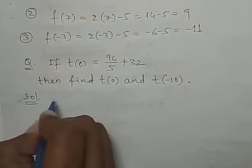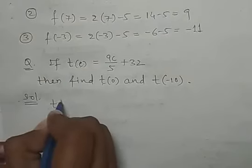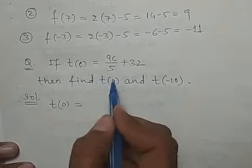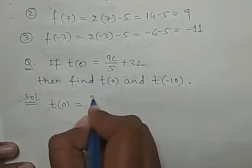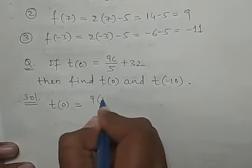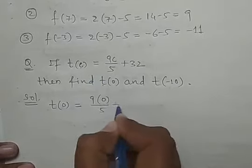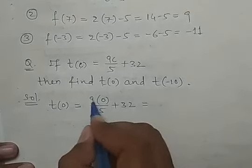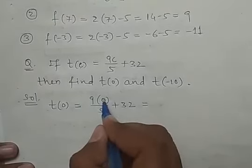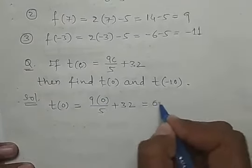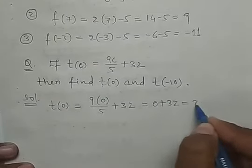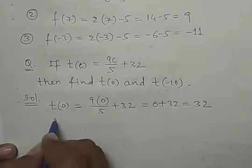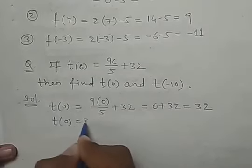For the solution, we will put 0 at the place of c in the function. Therefore: 9(0)/5 + 32 = 0 + 32 = 32. This is the value of t(0).